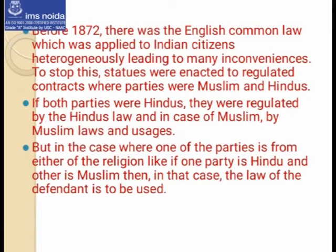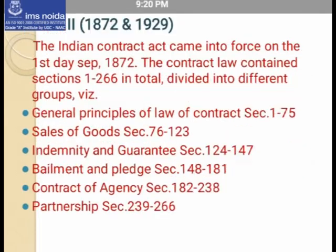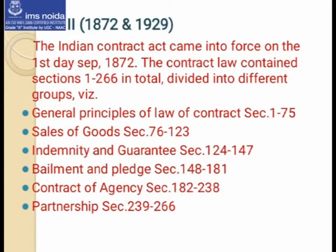Hindu personal law was applicable to Hindus. But if one party was Hindu and the other party was Muslim, then the defendant's personal law would be applied. This brings us to Phase 2, which started from 1872 to 1929 with the enactment of this particular act. The Indian Contract Act originally comprised 266 sections, divided into groups: sections 1 to 75 deal with the general principles of contract, and sections 76 to 123 deal with the sales of goods.